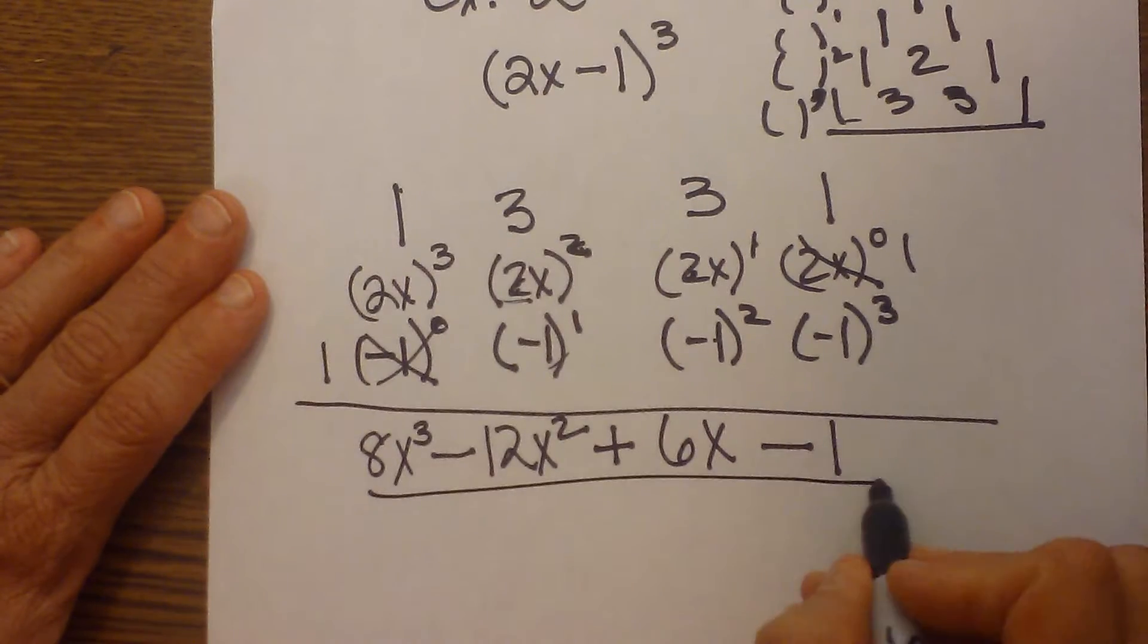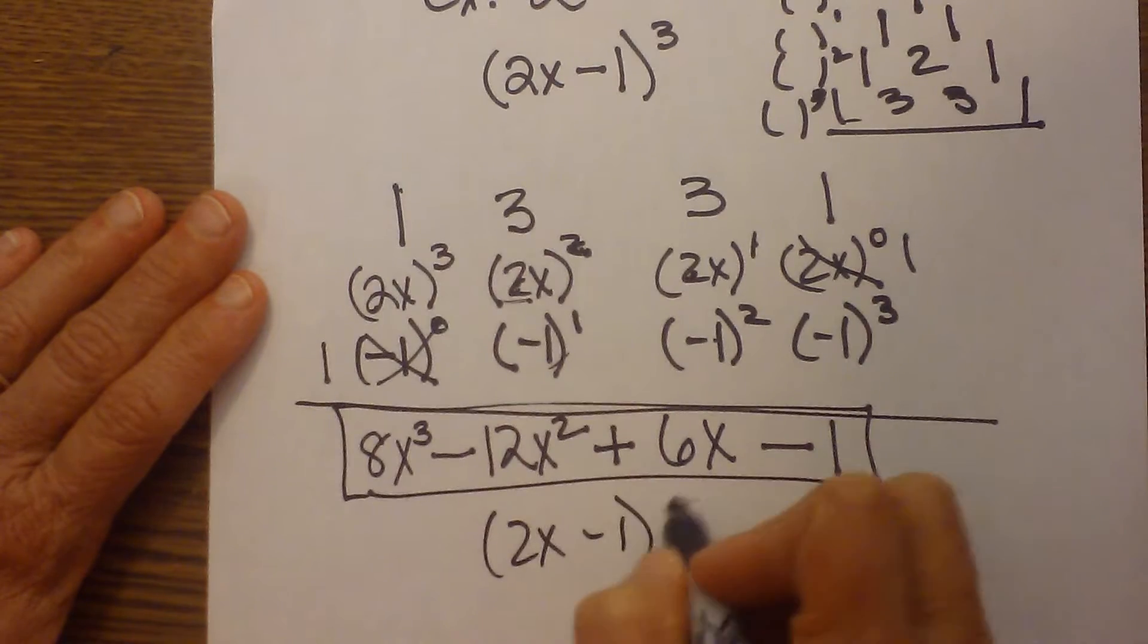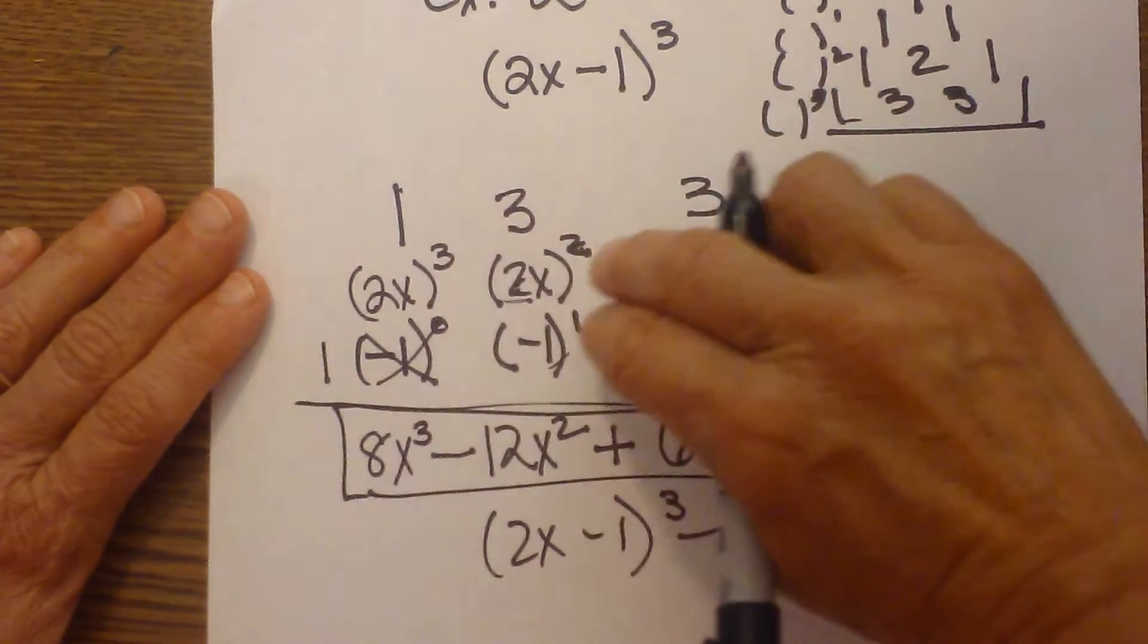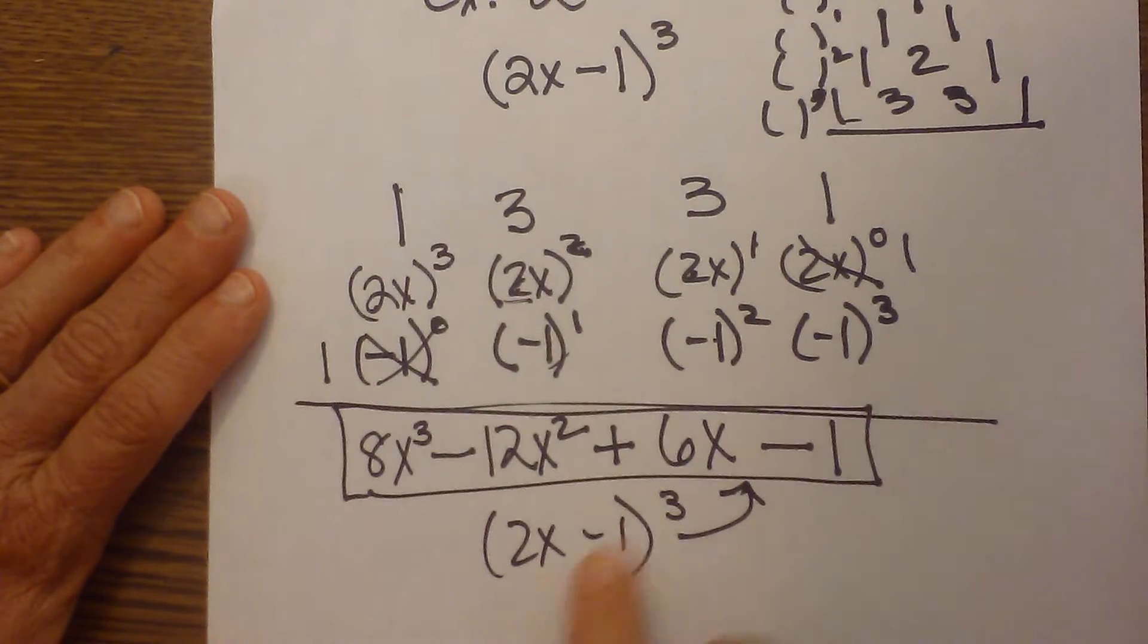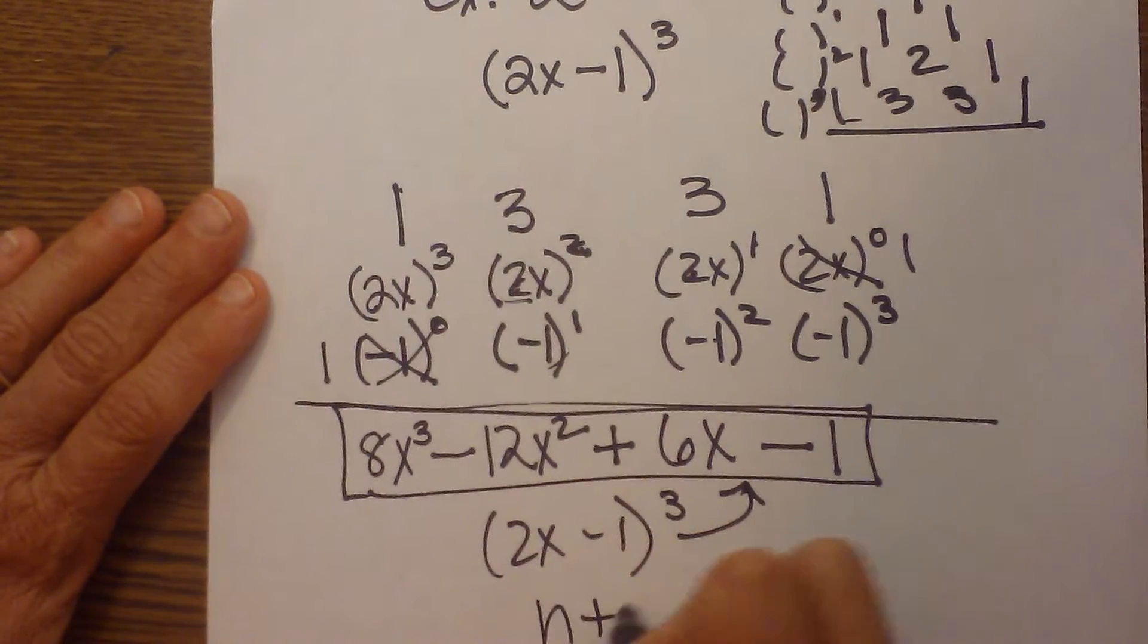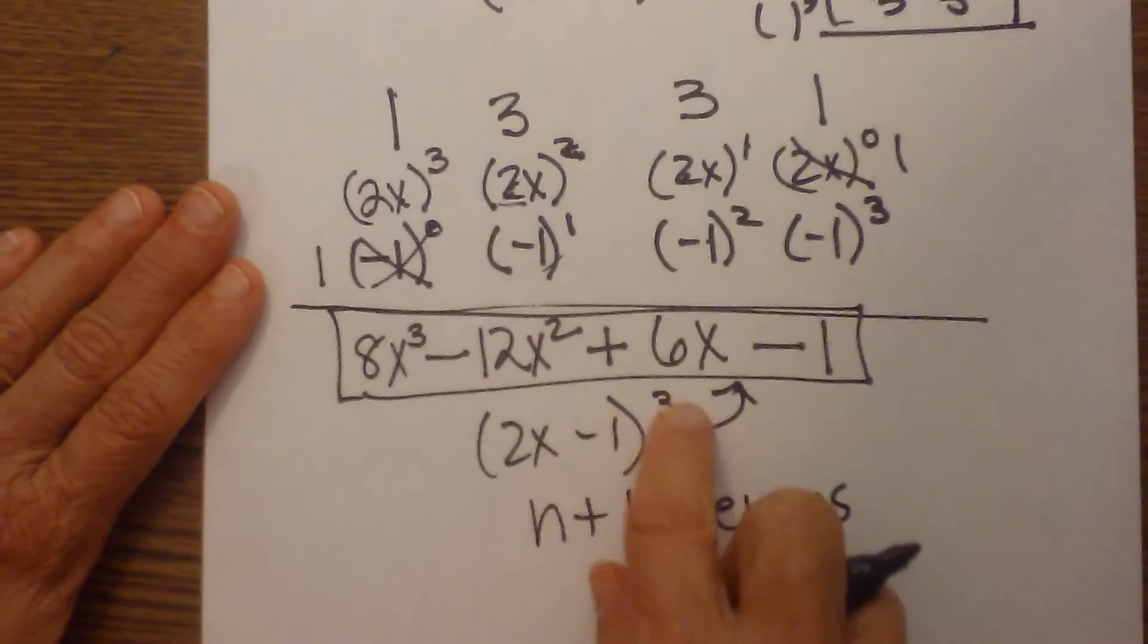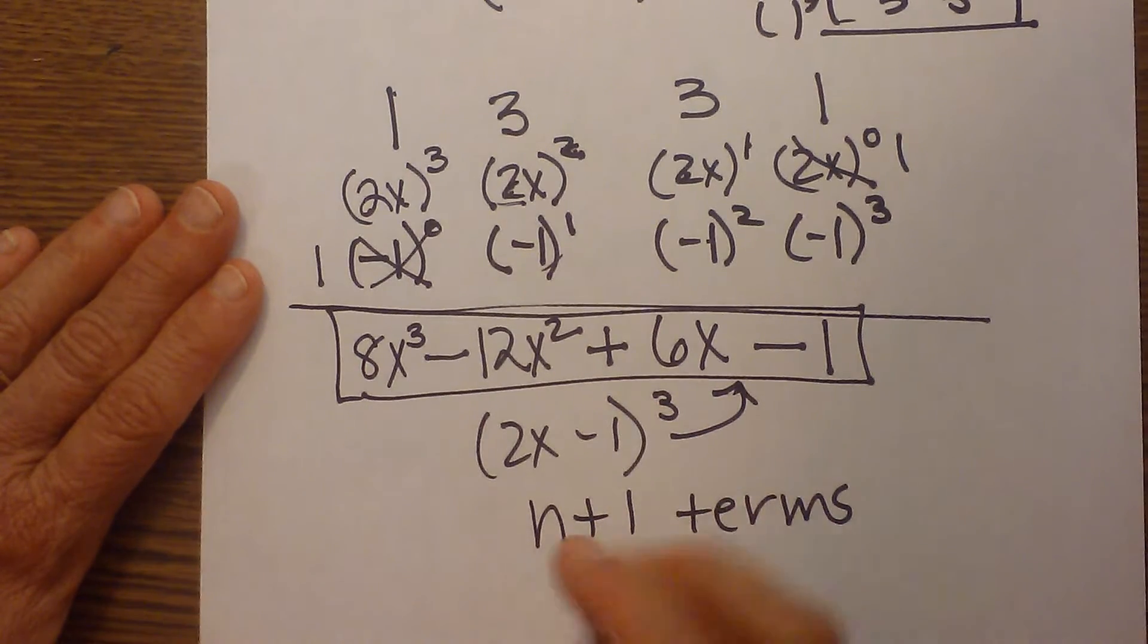So there is my 2x minus 1 quantity cubed, all expanded and multiplied out using Pascal's triangle. Now something else besides the fact that these exponents are always going to add to 3 as you're setting this up, you also have n plus 1 terms. And what that means is, when I'm expanding to the third power, my answer will have n plus 1, which is 3 plus 1, or 4 terms. And I have 1, 2, 3, 4 terms in this one.